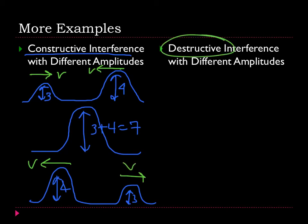For destructive interference with different amplitudes, let's say that I have a wave that is moving over here, that is positive 3, similar to what I have.